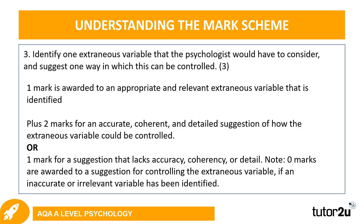Question three: identify one extraneous variable the psychologist would have to consider and suggest one way it can be controlled — three marks. One mark is awarded for identifying an appropriate and relevant extraneous variable. The other two marks come from justifying how you are going to control for it — two marks for an accurate, coherent, and detailed suggestion, or one mark for a suggestion which lacks accuracy, coherency, or detail.